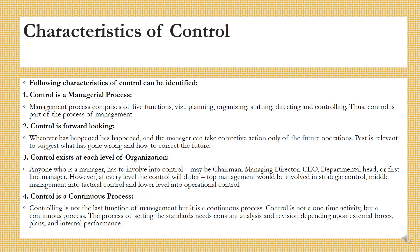Control is a continuous process. Controlling is not the last function of management but it is a continuous process — not a one-time activity. The process of setting these standards needs constant analysis and revision depending upon external forces, plans and internal performances. So, as long as an organization exists, some sort of control is always required. Just as a navigator continuously takes readings to ascertain whether he is on a planned course, so should the business manager continuously take readings to assure that his enterprise is on the right course. Control is a dynamic process and it is not at all static.